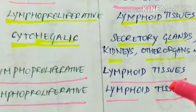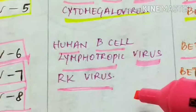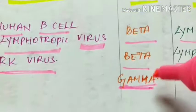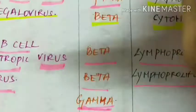Human herpes virus 8 has no specific common name and belongs to subfamily gamma.